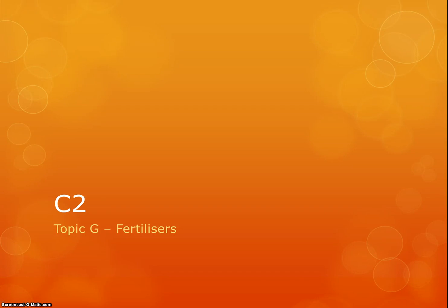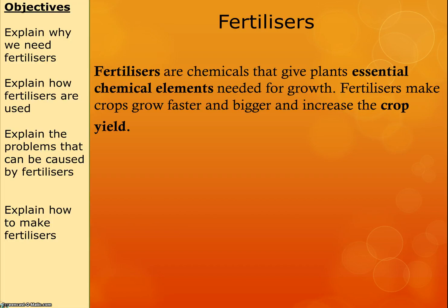Our penultimate topic for Chemistry 2 is topic G: fertilisers. There are lots of links to stuff we've already done. Fertilisers are chemicals that give plants essential chemical elements needed for growth. Basically they make your plants grow faster, bigger, and mean you get more of them. This is important because the population of the earth is growing exponentially, so we need more food for more people. Fertilisers help us do that.